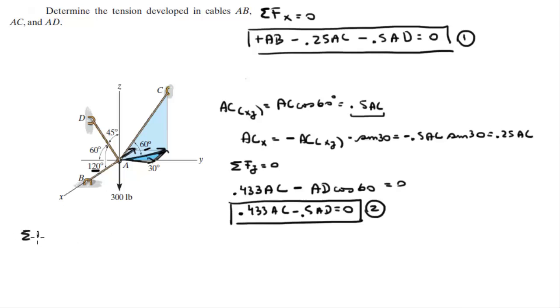And last but not least, sum of the forces on the Z is equal to 0. On the Z, we have the AC component in the Z direction, which is easily found by doing AC times the cosine of 60, plus AD, which is also going up, and they give you the angle that it forms with the Z axis, which is AD times the cosine of 45, minus the 300 pound force going straight down right here.